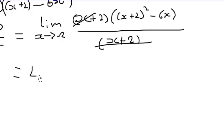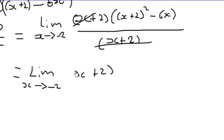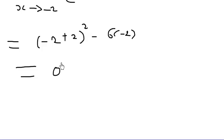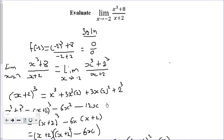We are left with the limit as x approaches negative 2 of x plus 2 squared minus 6x. We can now substitute x equals negative 2: negative 2 plus 2 squared minus 6 times negative 2. This gives us 0 squared plus 12, which evaluates to 12. Hence the limiting value of this expression is 12.